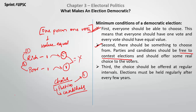Parties and candidates should also be free to contest elections. For example in India, if you don't belong to any party — if you don't like BJP, Congress, or any party's ideology — you still have the right to contest elections. You can stand as an independent candidate without belonging to any party. You must have seen independent candidates in your constituencies who don't belong to any party but still contest elections.